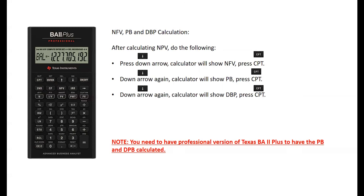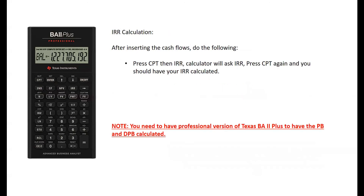Again, as a reminder, you're not going to be able to calculate the payback or discounted payback period if you don't have the professional version of the Texas BA2 Plus instrument. Finally, we're going to calculate the IRR. After inserting the cash flows, you can calculate the IRR without having to calculate the payback period, NPV, or discounted payback period first. Once you've input the cash flows, simply press CPT, then IRR. The calculator will ask if you want to calculate IRR — press CPT again, and you're going to get the same answer as the one we received on Excel.